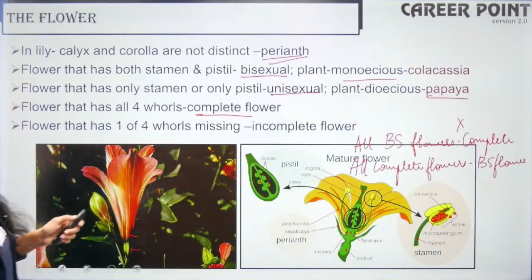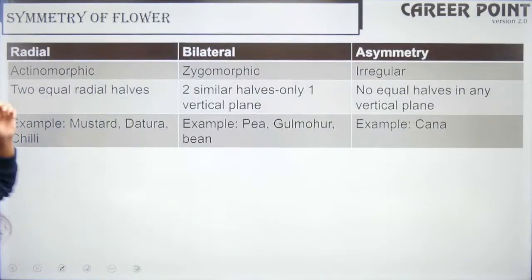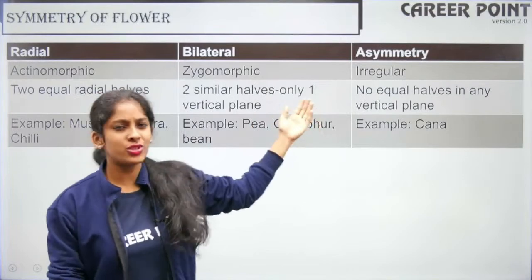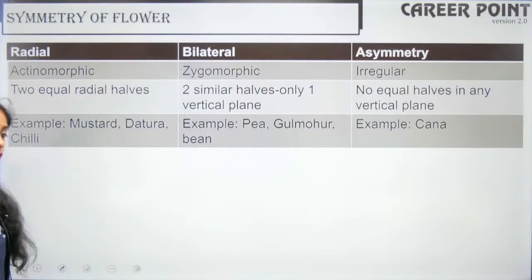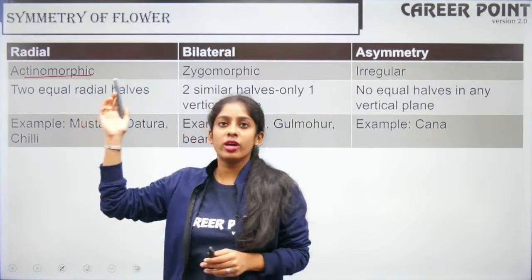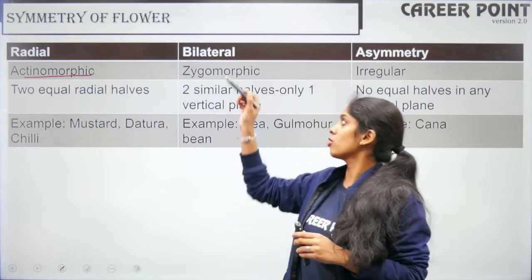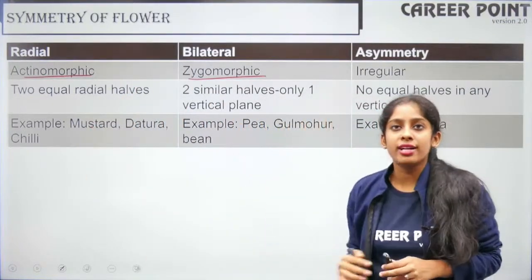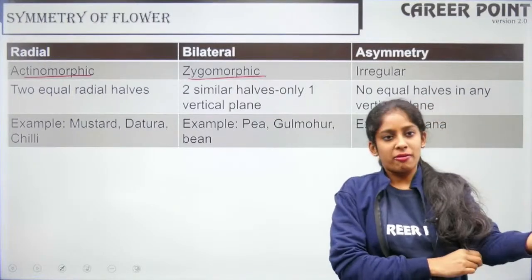Now talking about the symmetry of your flower. There are three types: radial, bilateral and asymmetry. Asymmetry means irregular — no plane of division gives identical parts. Radial symmetry, called actinomorphic, has more than one plane of division giving identical halves; examples are mustard, datura and chili. Bilateral symmetry, called zygomorphic, has only one plane of division giving identical right and left halves; examples are pea, gulmohar and bean.